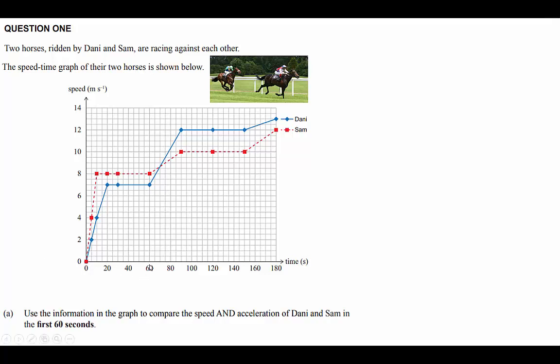So the first 60 seconds takes us up to this point here and just looking at the graph we can see that both of the riders start from stationary and Sam has a steeper line here indicating a higher rate of acceleration and that acceleration is taking Sam from 0 meters per second to 8 meters per second over a time of 10 seconds, so each little box representing 5 seconds because there's four boxes between 0 and 20.